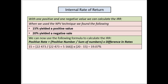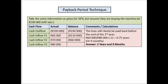That covers the internal rate of return. Now let's look at the payback period technique. We take the same information as for the net present value, and assume they are buying the machine for 190,000 rand excluding VAT. There is no discounting here — we don't have to divide by anything because we are not considering the time value of money. The cash outflow is shown in brackets to indicate it's negative, and the first cash inflow is 60,000.